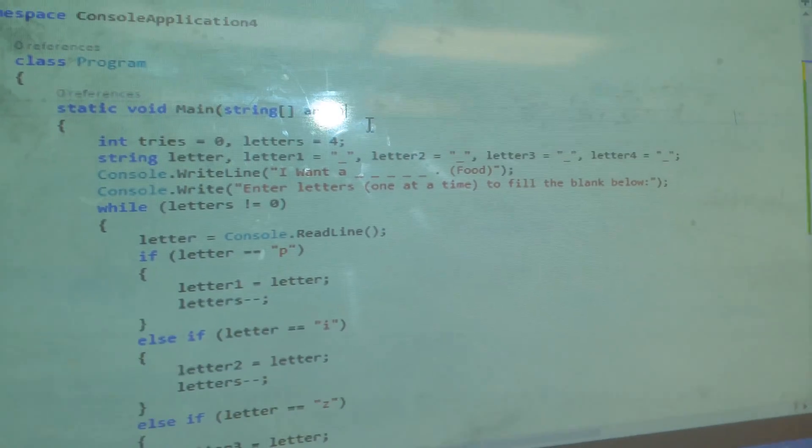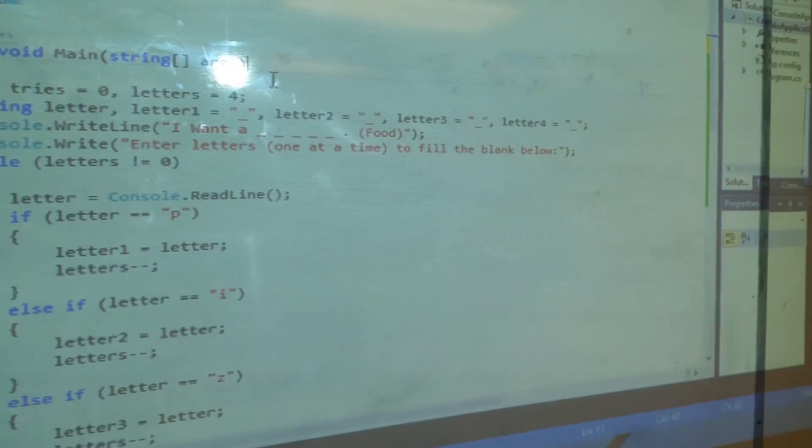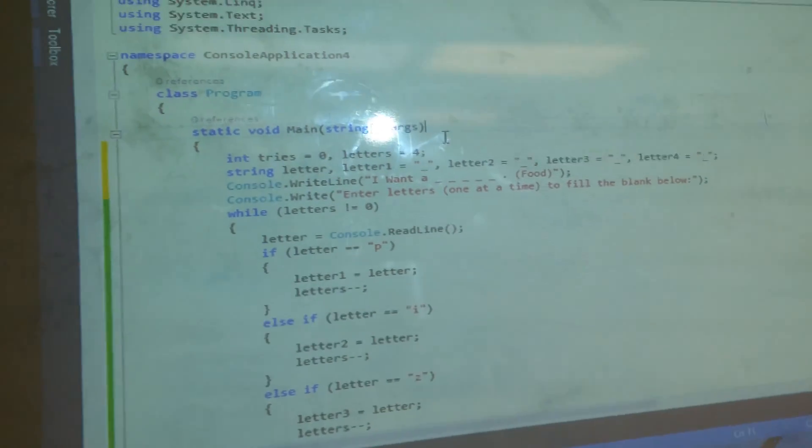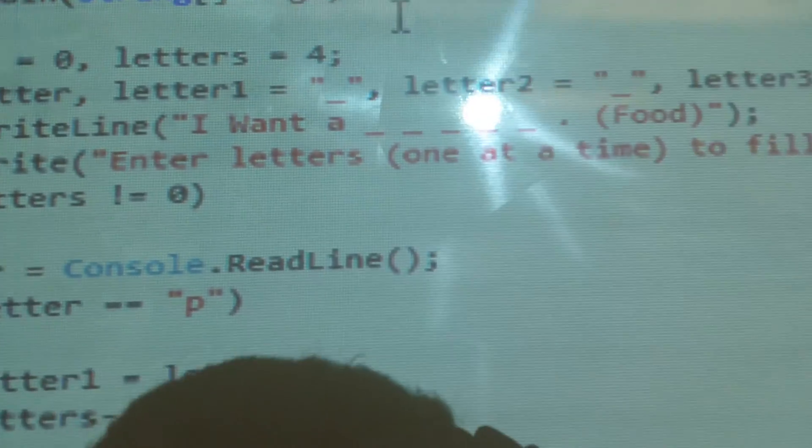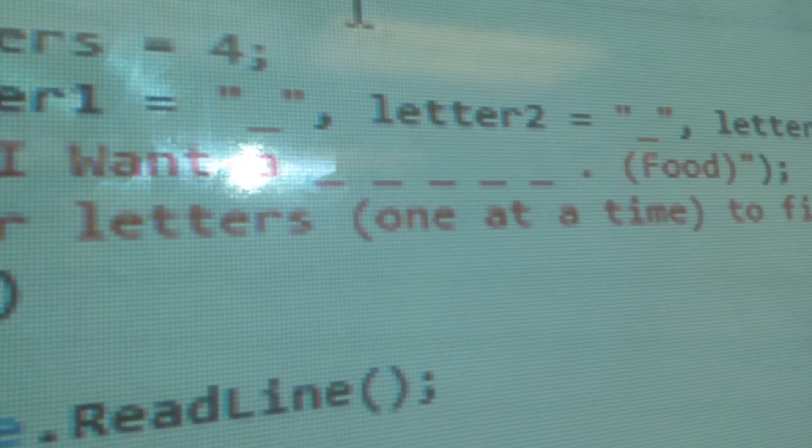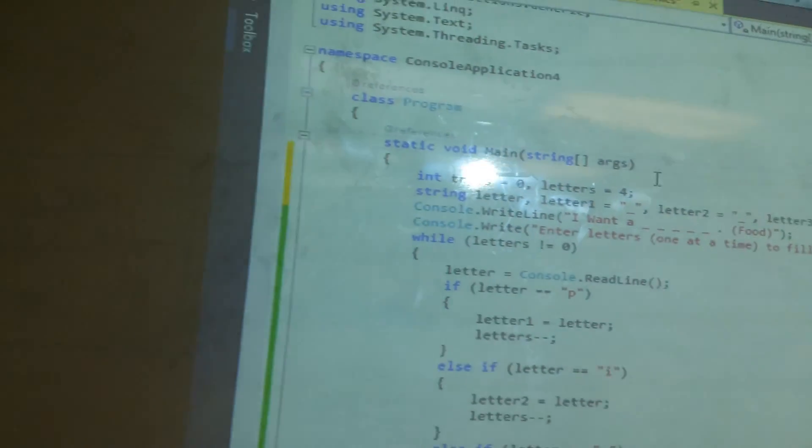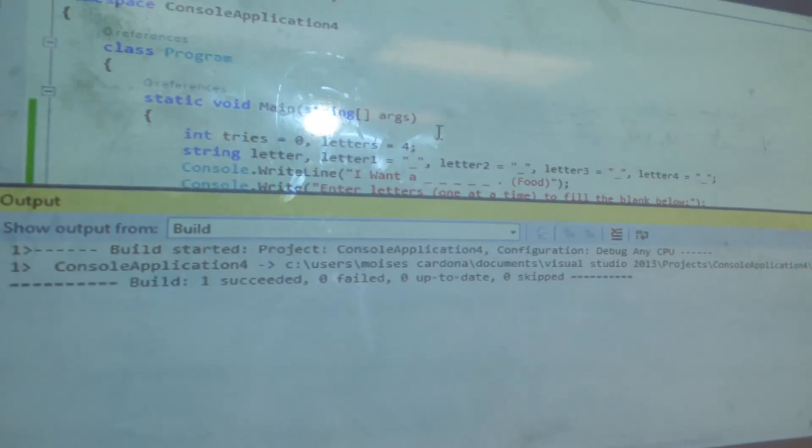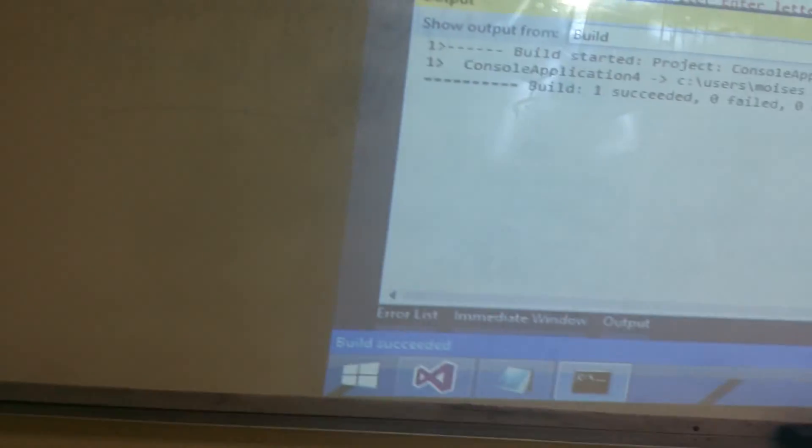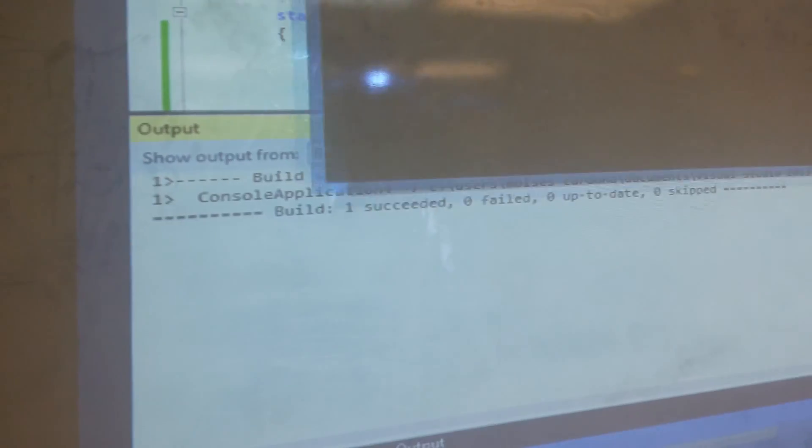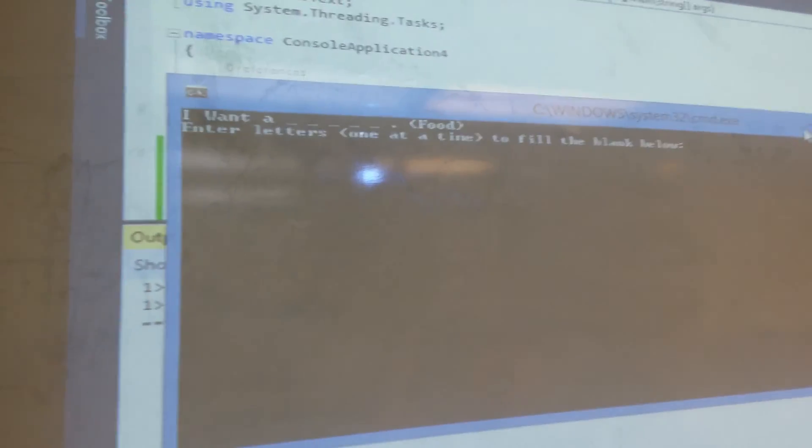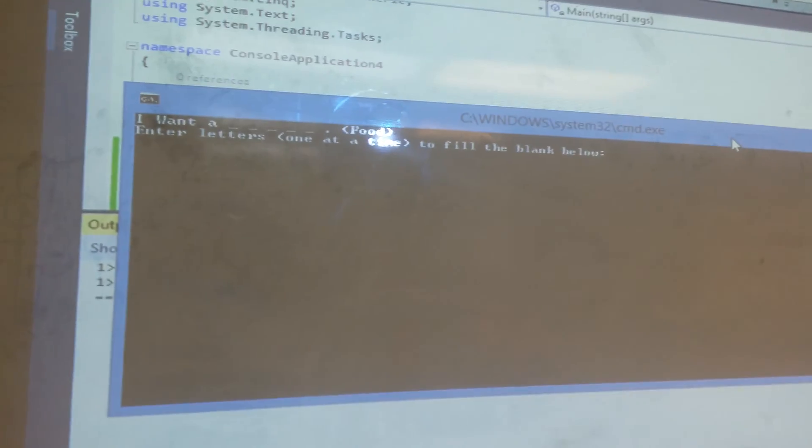The sentence is as follows: I want a blank and it's a food. So I'm going to start the debugger and here is the game. I want a blank, enter a letter one at a time to fill the blank below.